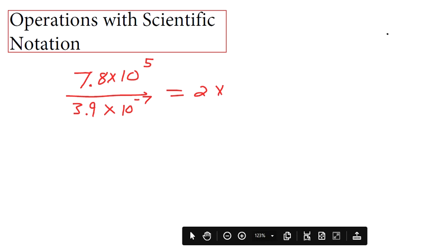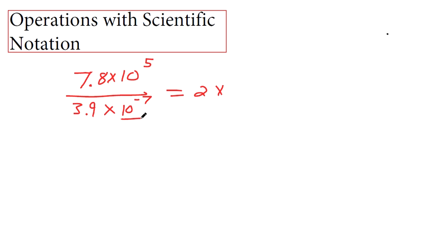We've got 10 to the 5th over 10 to the negative 7th. Remember, when you're dividing two numbers with the same base, your exponents subtract.